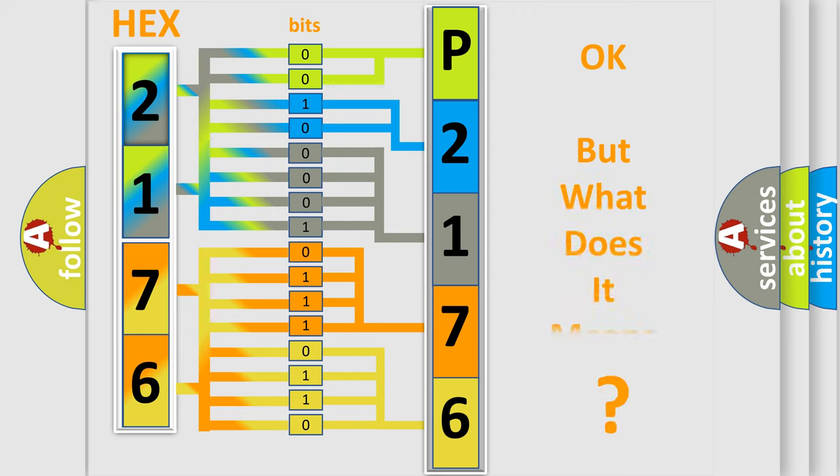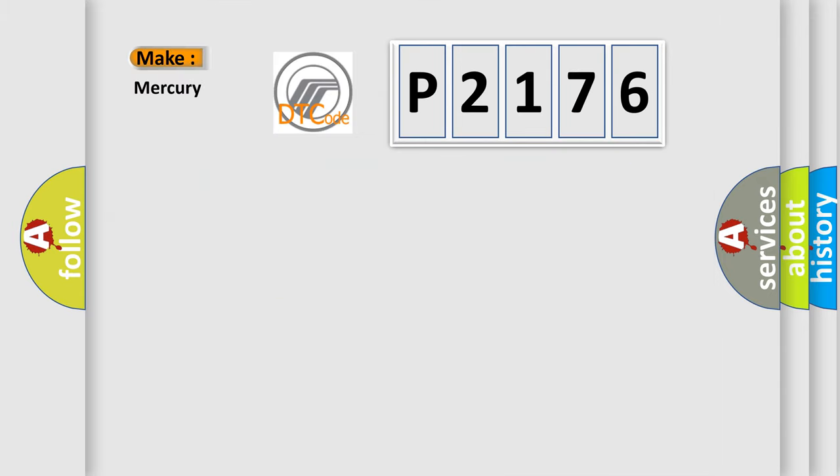The number itself does not make sense to us if we cannot assign information about what it actually expresses. So, what does the diagnostic trouble code P2176 interpret specifically for Mercury car manufacturers?